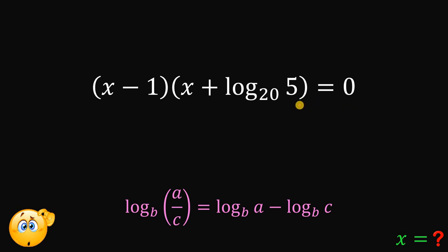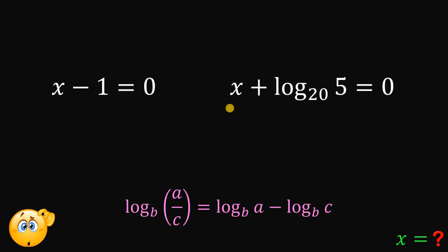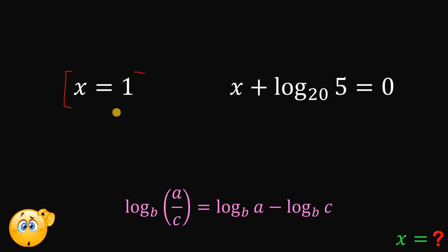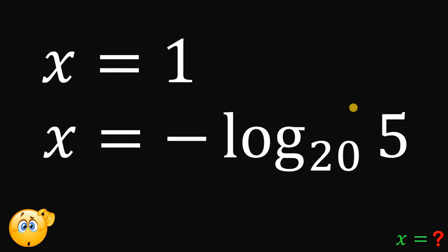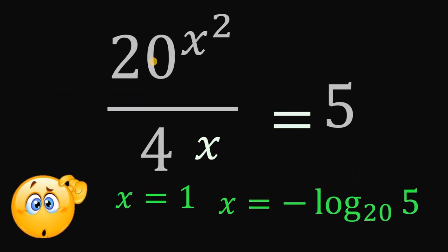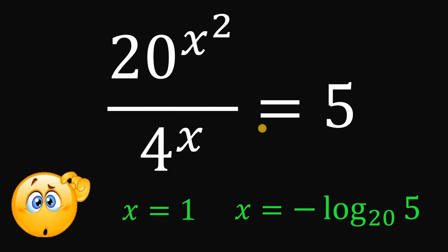Since the product equals 0, at least one factor must equal 0. So either x minus 1 equals 0, giving x equals 1 — which you can verify by observation — or x plus logarithm of 5 to the base 20 equals 0, giving x equals negative logarithm of 5 to the base 20. Those are the two real values of x that satisfy the equation 20 raised to the power of x squared over 4 raised to x equals 5.